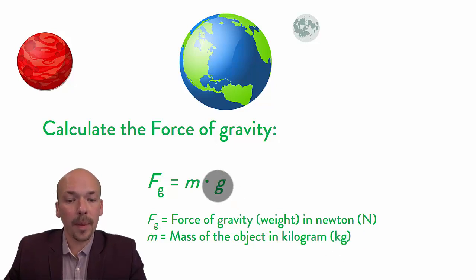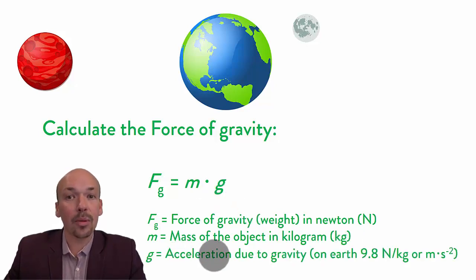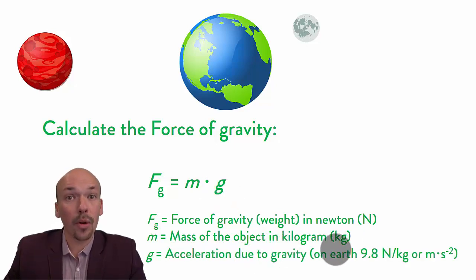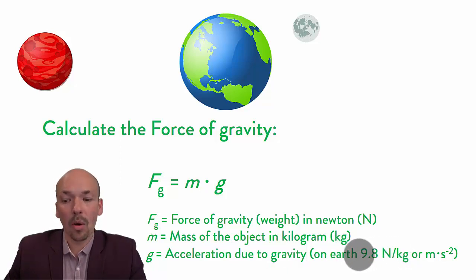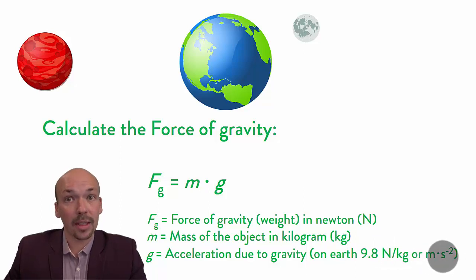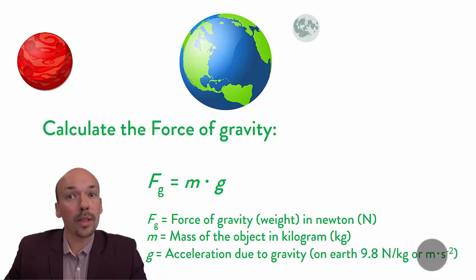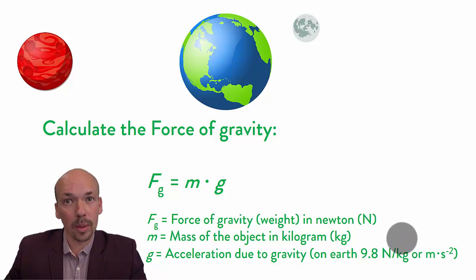And we have g. G is the acceleration due to gravity, and on Earth this is 9.8 newtons per kilogram, or 9.8 meters per second squared. Usually one of these two is used — you have to look in your own book to see which one you use.